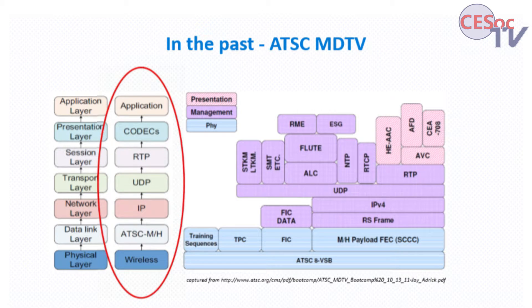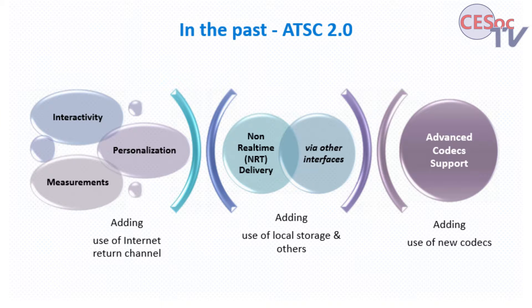The next step was to add a mobile DTV layer. This was sent in conjunction with ATSC 1.0, but the transport for the mobile DTV portion was based on IP instead of MPEG-2 transport — the first step away from MPEG-2. Then there was ATSC 2.0, a backwards compatible way of enhancing the original DTV broadcast, adding use of a return channel through the internet, non-real-time use of local storage, and advanced codecs. ATSC 3.0 work started up as ATSC 2.0 was being developed and actually overtook it, with many more capabilities.